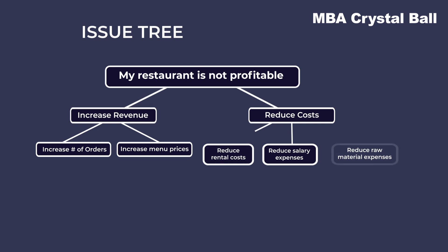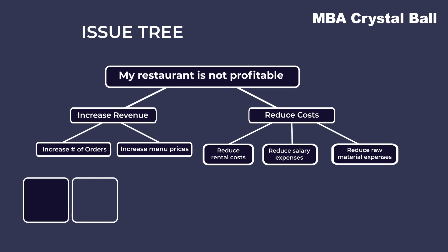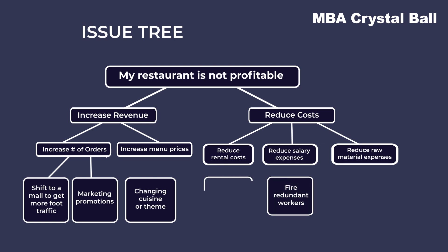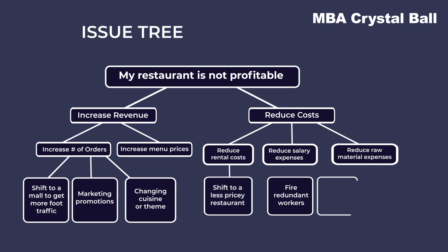On the third level, the issue tree would tackle the question of how to increase the number of orders. One way would be to shift the restaurant to a busier area, and another would be to launch a marketing campaign so that the restaurant becomes more widely known. Under reduce salary expenditure, options such as firing redundant workers could be mentioned. Also, shift to a less expensive locality under reduce rentals, and change the vendors under reduce raw material expenses.